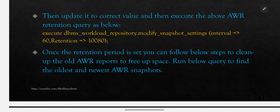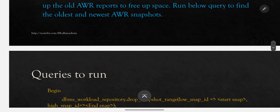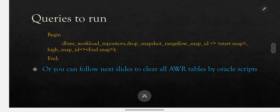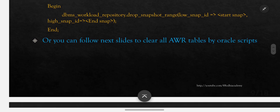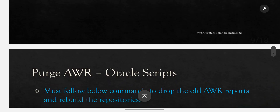Once the retention period is set, follow the below steps to clean up old AWR reports and free up space. Run the below query to find the oldest and newest AWR snapshots. You can execute: dbms_workload_repository.drop_snapshot_range(low_snap_id, high_snap_id); or follow the next slides to clear all AWR tables using Oracle scripts.